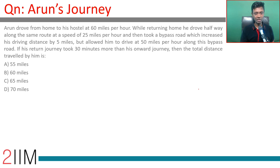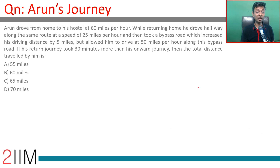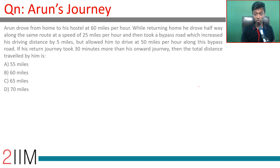Arun drove from home to his hostel at 60 miles per hour. While returning home, he drove halfway along the same route at 25 miles per hour and then took a bypass road which increases the driving distance by 5 miles but allowed him to drive at 50 miles per hour along this bypass road. If his return journey took 60 minutes more than his onward journey, find the total distance travelled by Arun.